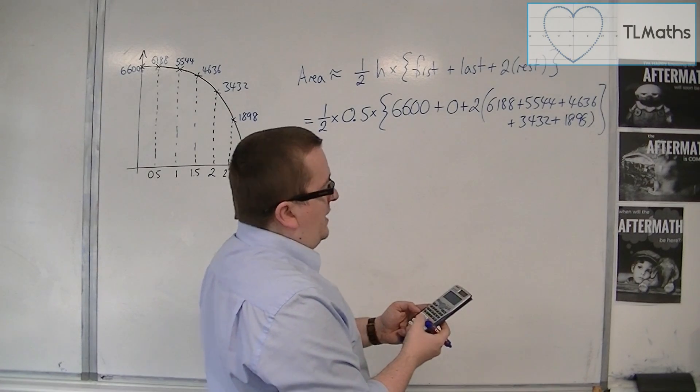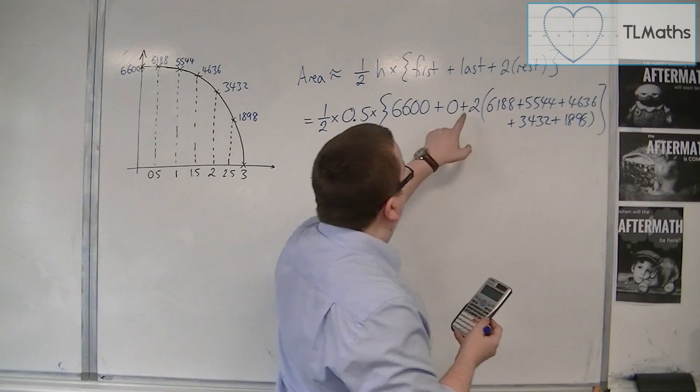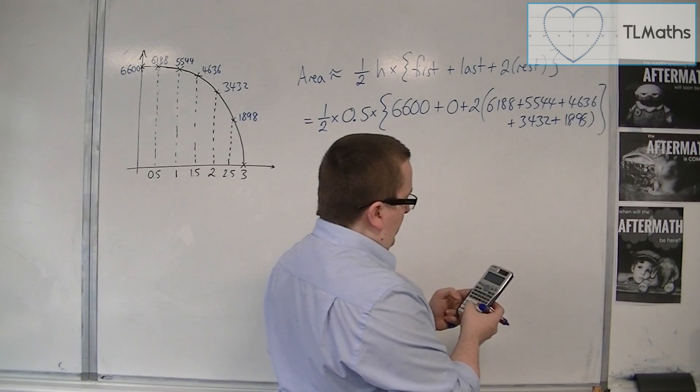That's 21,698. Then times it by 2. Then add the 6600.